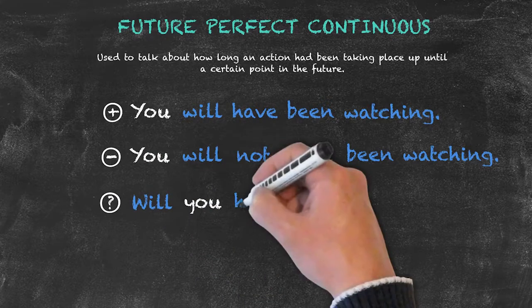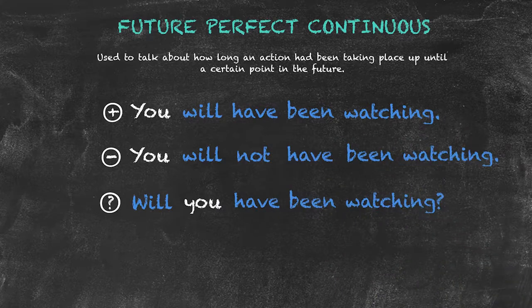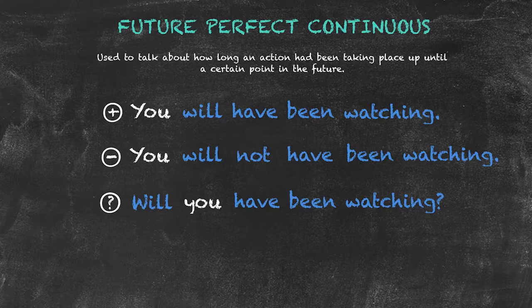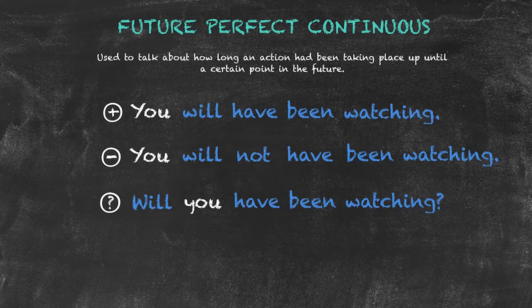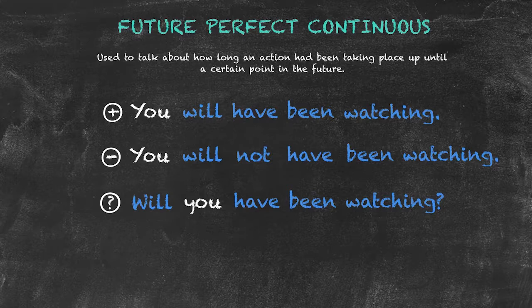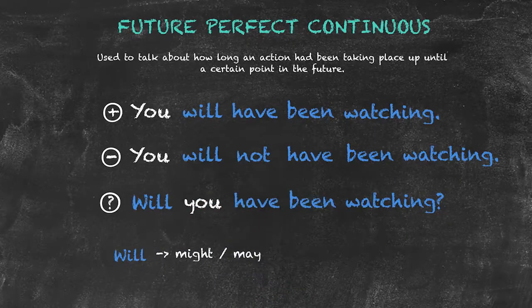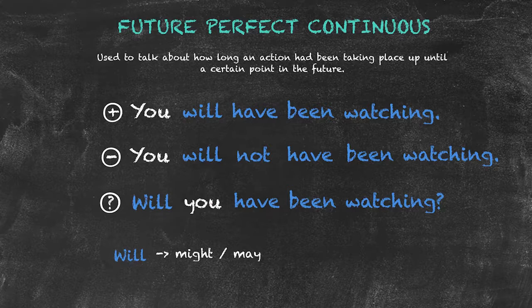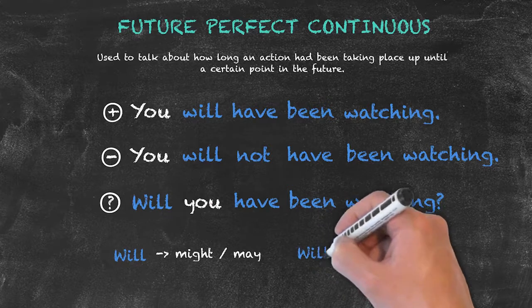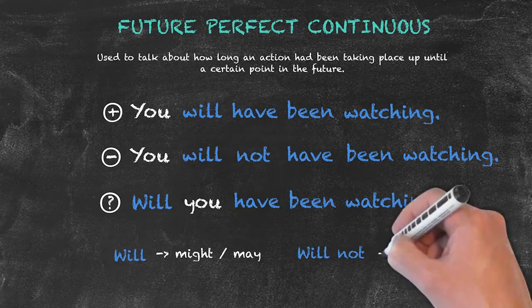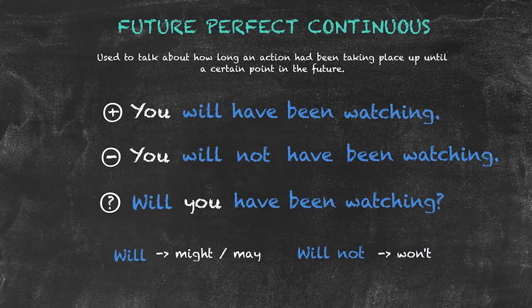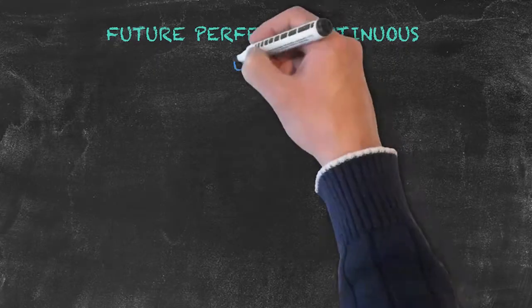As with the other future tenses, the word 'will' can be substituted for other modal verbs. These modal verbs would indicate varying levels of certainty for the future. So again, we could substitute 'may' or 'might' for the word 'will'. Also with the future tenses, 'will' and 'not' will contract into its contracted form 'won't'.